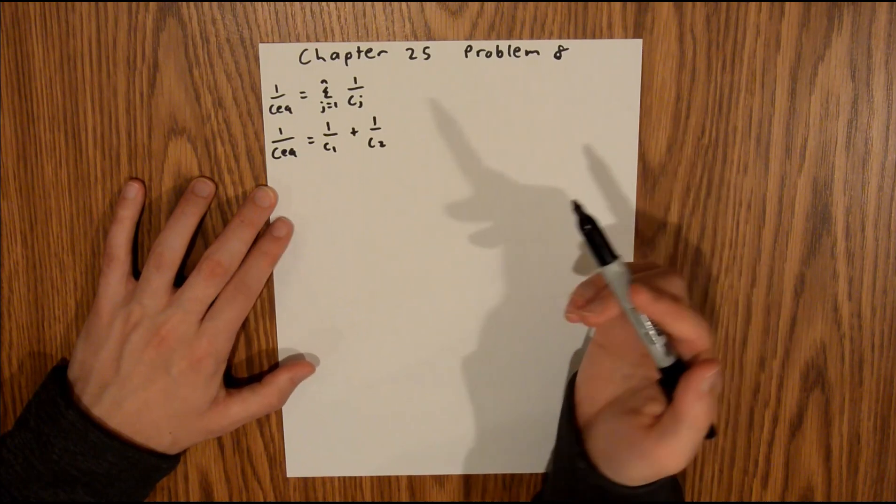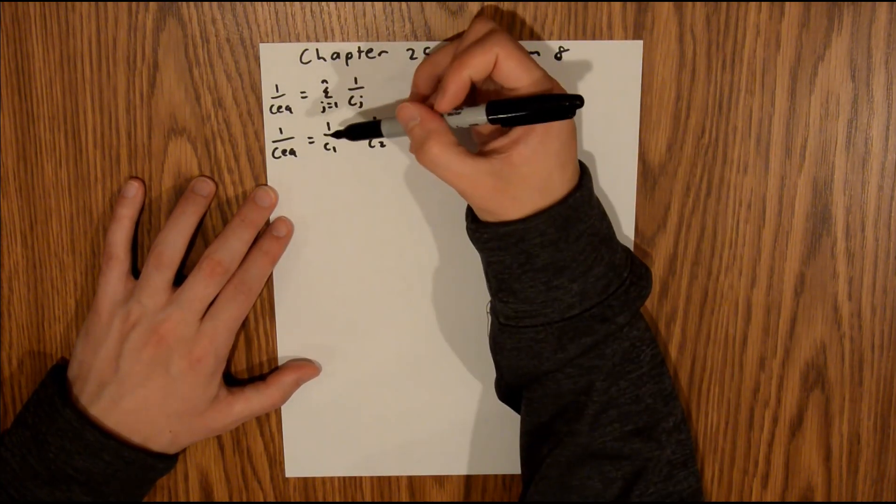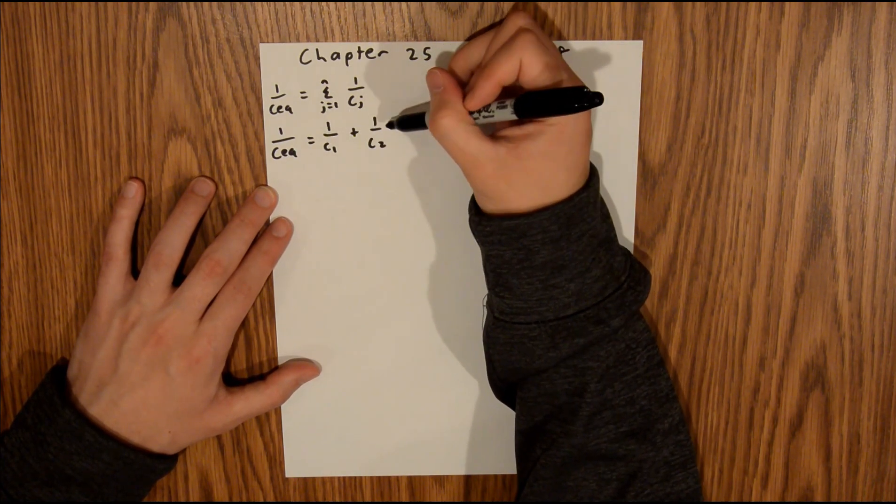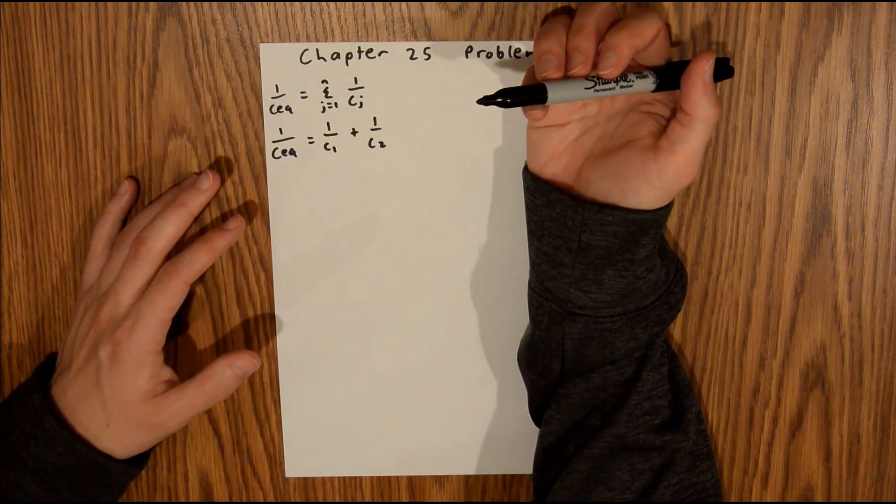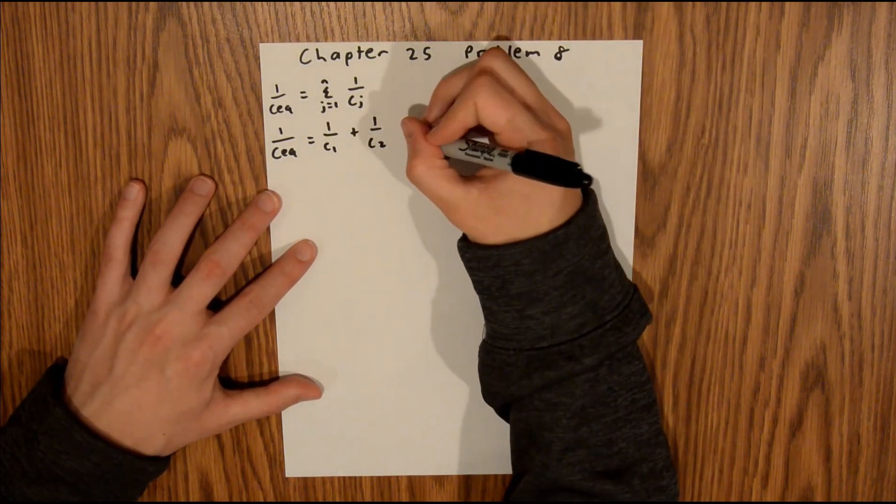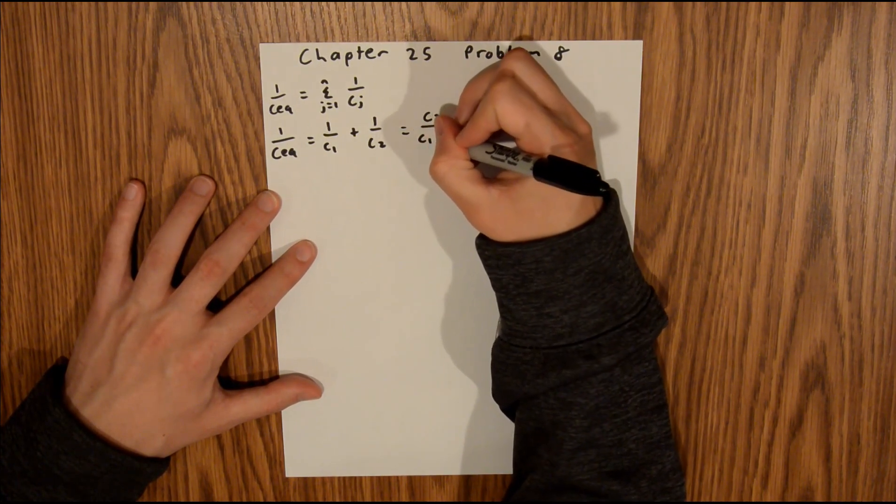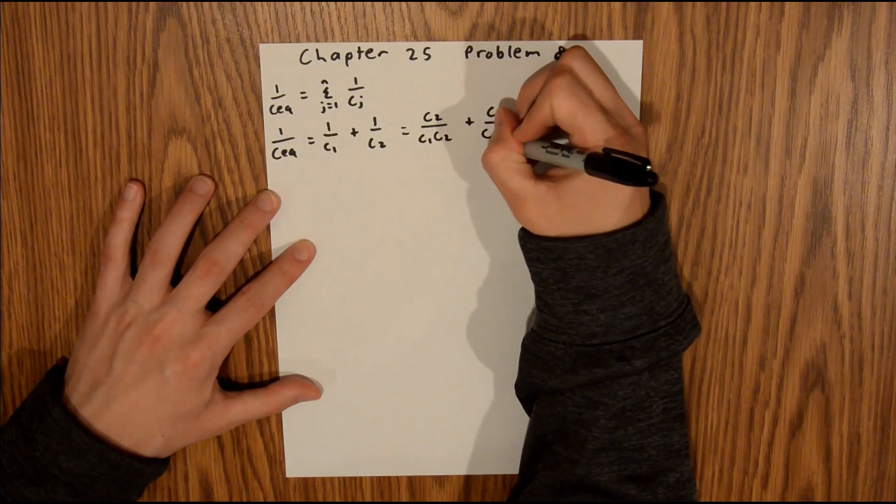It would be nice to combine this into one term, so we're going to have to find a common denominator. We can multiply this fraction by C2 over C2, and this fraction by C1 over C1, essentially just multiplying by 1 but getting a common denominator. That's going to be equal to C2 over C1C2 plus C1 over C1C2.